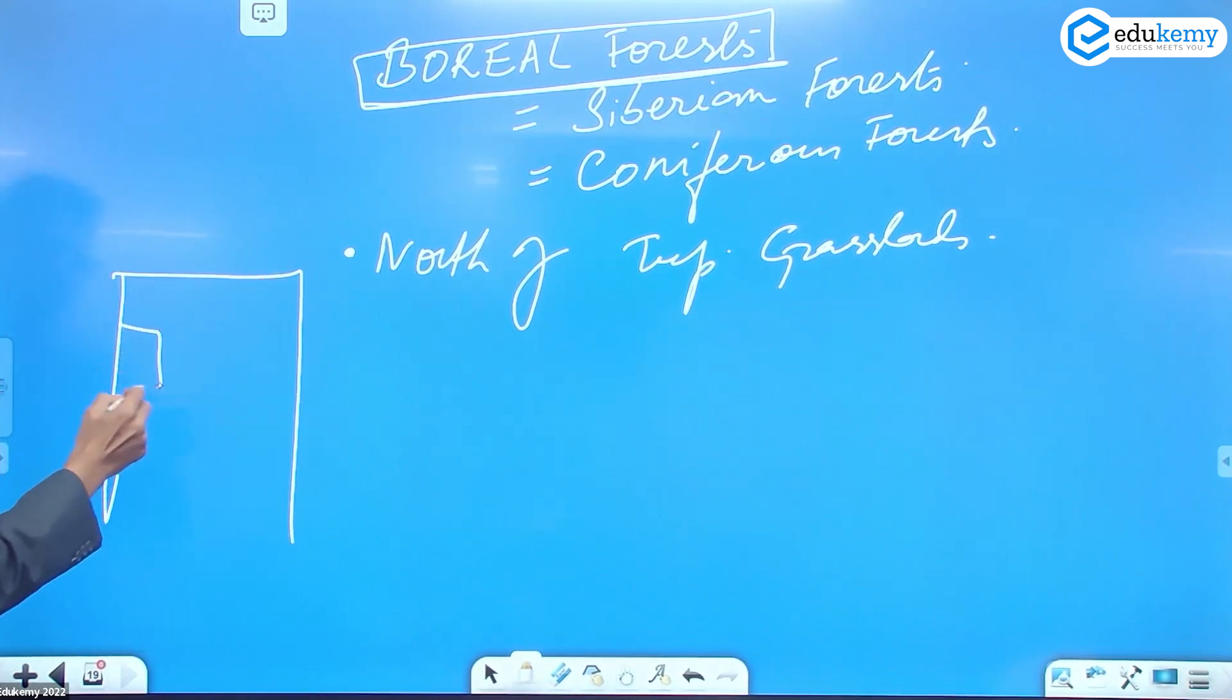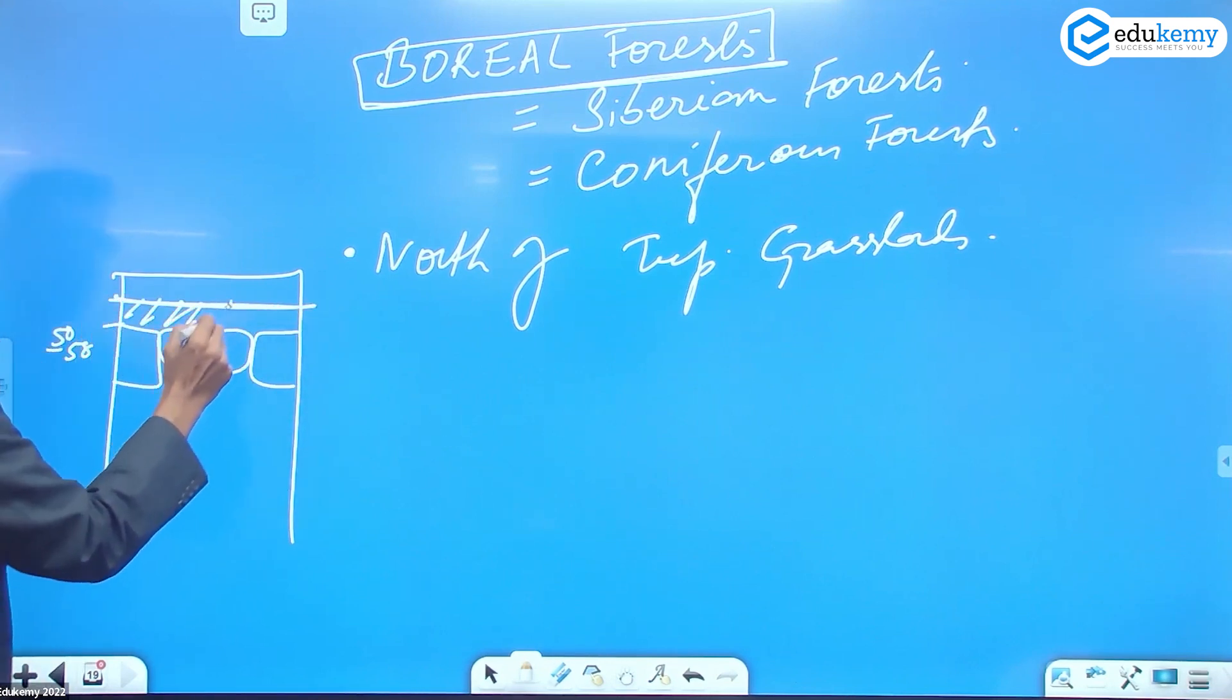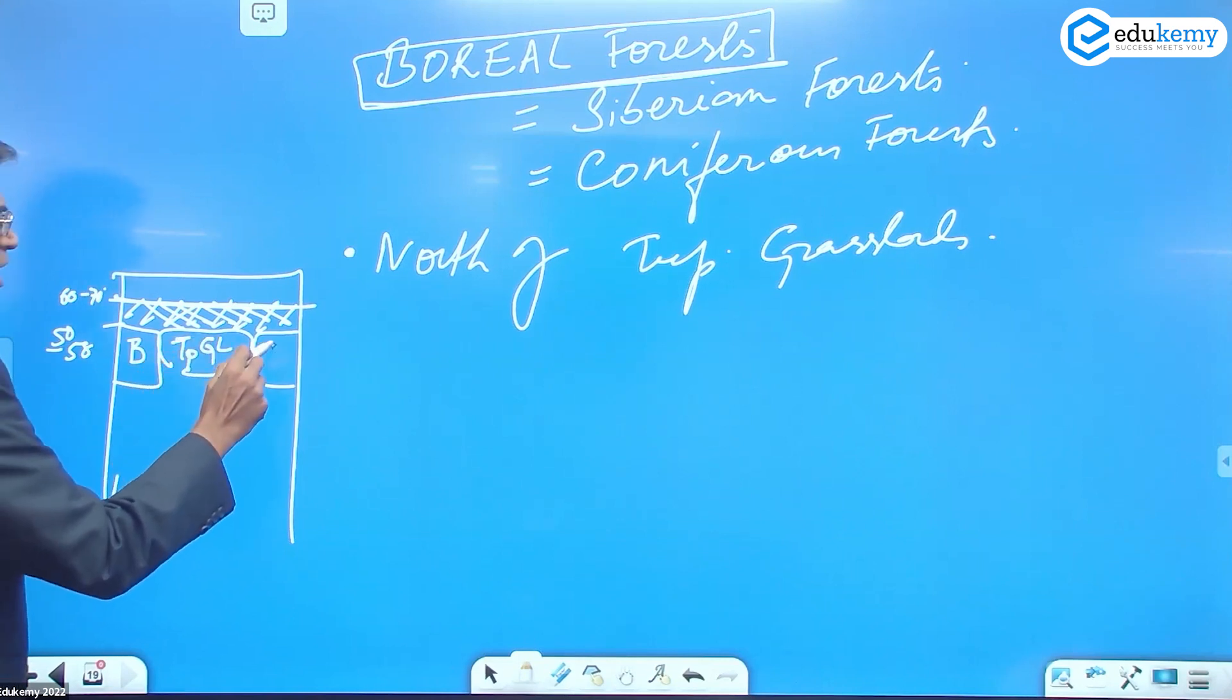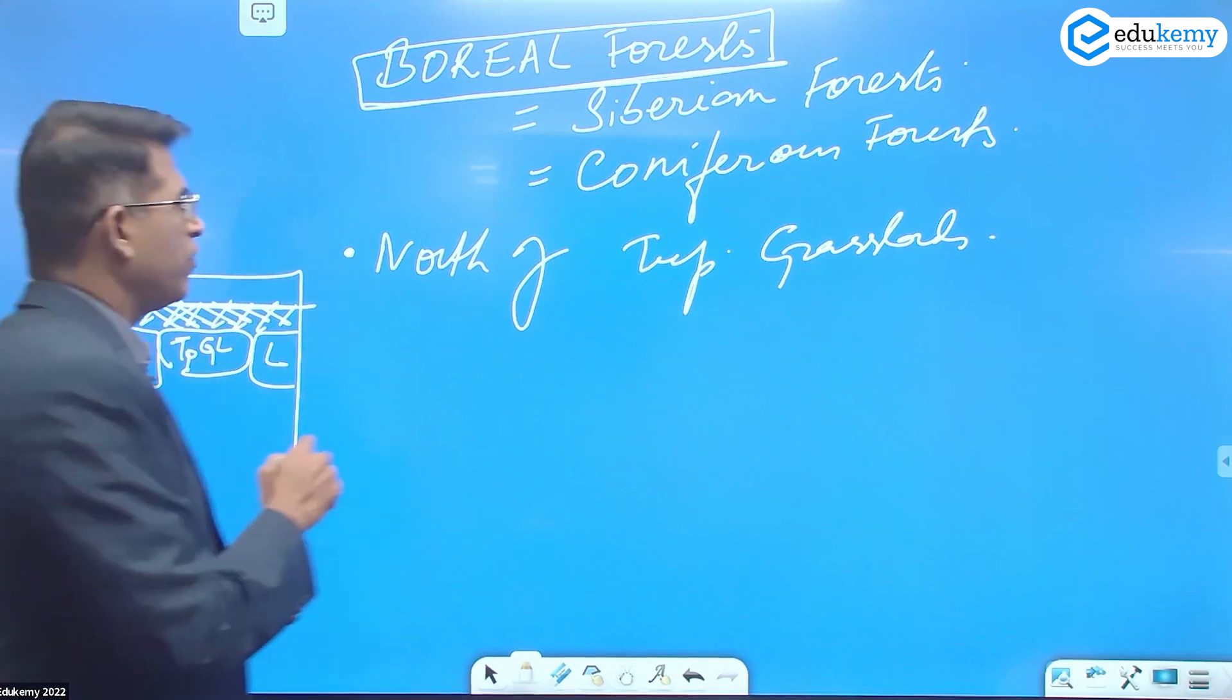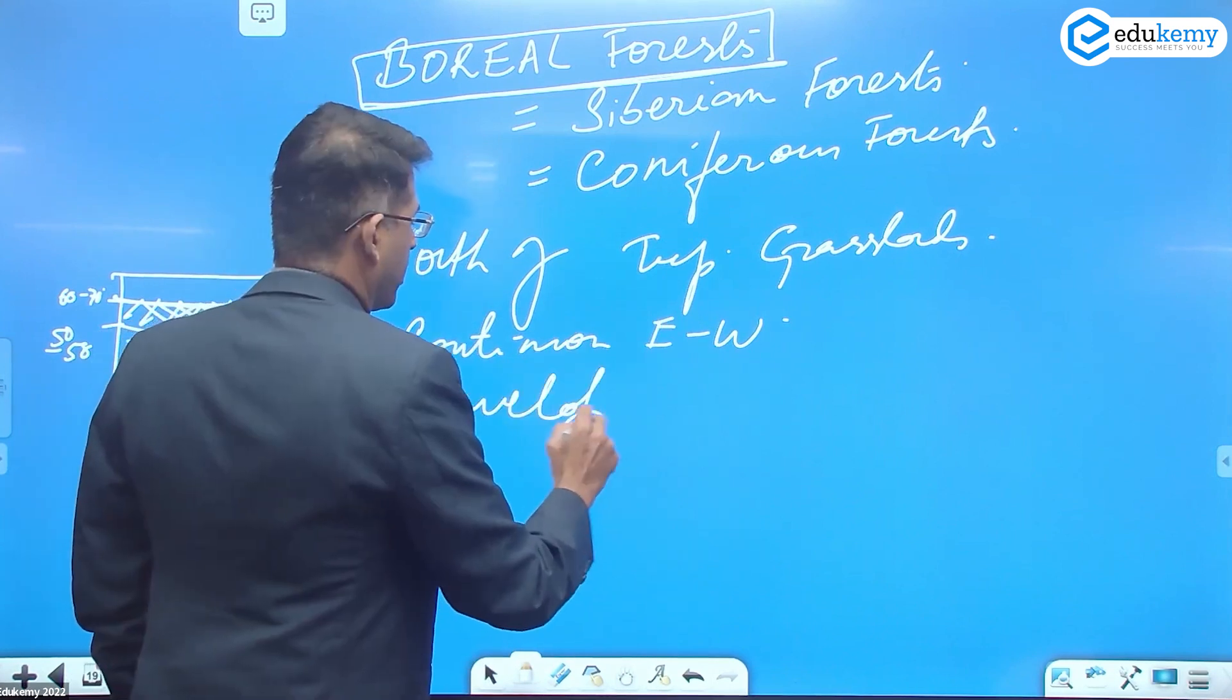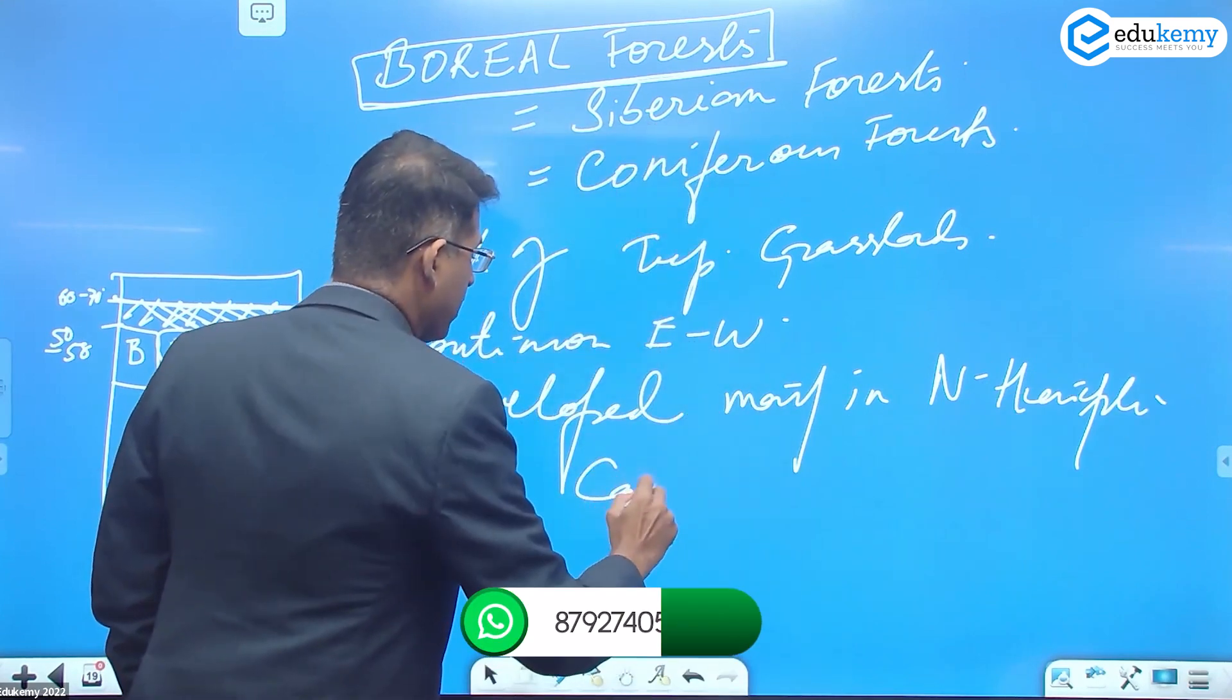The British type of climate, the temperate grasslands, the Laurentian type of climate, 50-55 degrees. In the north of this they are almost continuous east-west. They are developed mainly in the Northern Hemisphere.